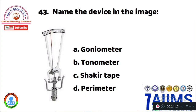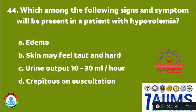Question 43: Name the device in this image. Option A: goniometer. Option B: tonometer. Option C: Shakespeare's tape. Option D: perimeter. The right answer is Option B, tonometer. Question 44: Which among the following signs and symptoms will be present in a patient with hypovolemia? Option A: edema. Option B: skin may feel taut and hard. Option C: urine output 10 to 30 ml per hour. Option D: crepitus. In hypovolemia, Option C, urine output will be 10 to 30 ml per hour.